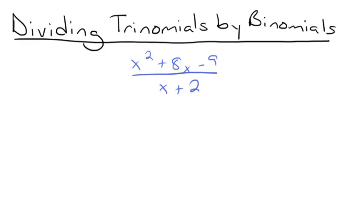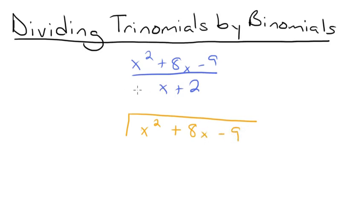We're going to follow the same steps we did in the last problem, starting by setting up our long division problem. We're going to have the trinomial underneath: x squared plus 8x minus 9, and then our binomial out here: x plus 2. Now we figure out how many times x goes into x squared. x times x equals x squared, so it goes in x times, and we write that right here. Now we multiply x by x plus 2, and we get x squared plus 2x, and we write that right here.